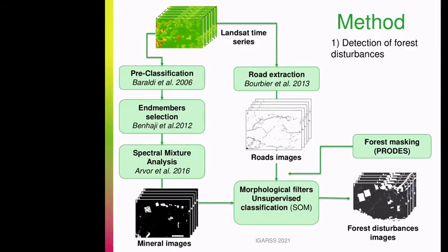Different algorithms were used in a complementary way to detect forest disturbances. First, we used the algorithm developed by Broich et al. to detect logging tracks. This algorithm uses spectral indices to enhance contrast between bare soil and forest cover, as well as morphological filters such as elongation filters. Second, an automatic methodology developed by Baraldi was used to assign pixels to up to 46 semantic spectral categories, exclusively based on spectral values.